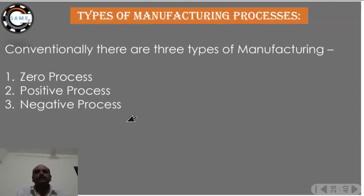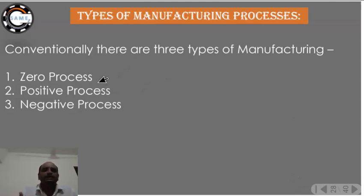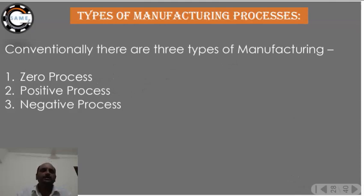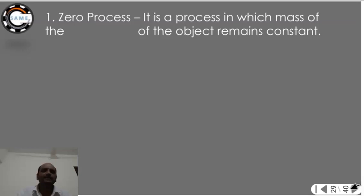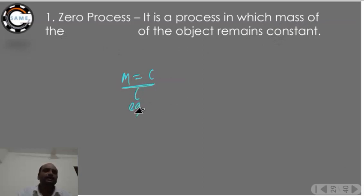Now we are entering the main syllabus — the types of manufacturing processes. Conventionally there are three types: zero process, positive process, and negative process. In a zero process, the mass of the object remains constant. The example of zero process is casting — whatever amount of material you put in, it remains the same. Forging is also a zero process.